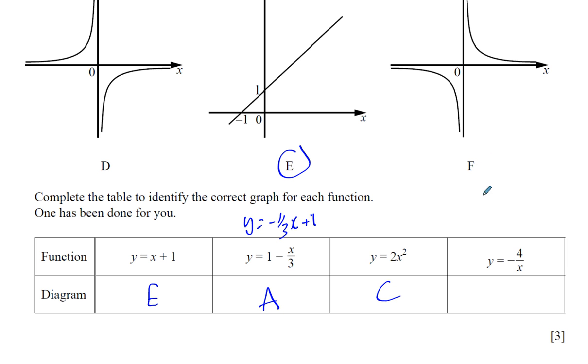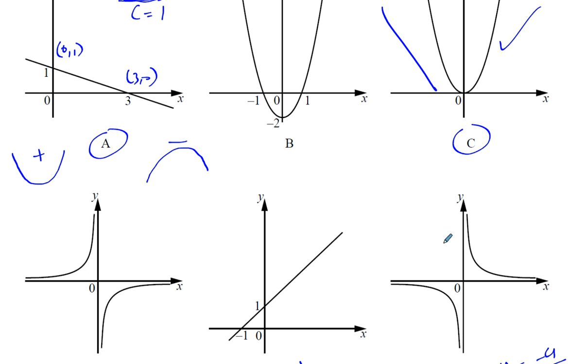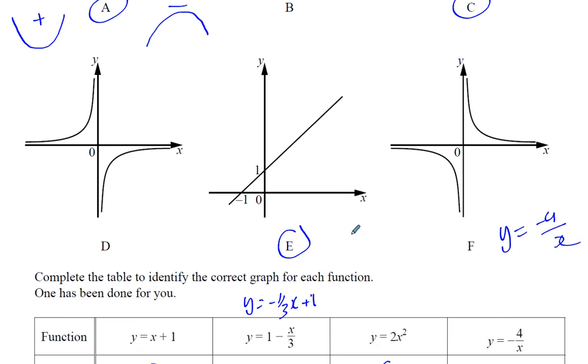Then you have y equals minus 4 divided by x. This is a reciprocal graph where x can never be 0, so that's called an asymptote. If x is 0, it's undefined. And similarly, if I rearrange it, it will be x equals minus 4 over y. y can also never be 0, so that's another asymptote where the curve will never touch. So it's out of either D or F.